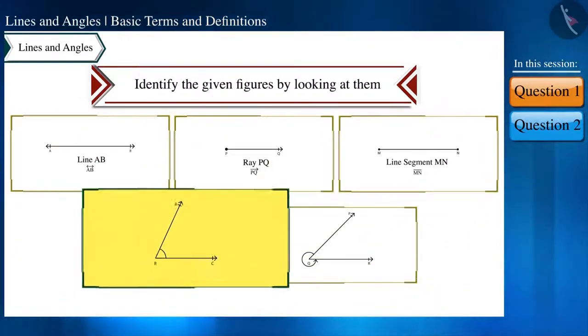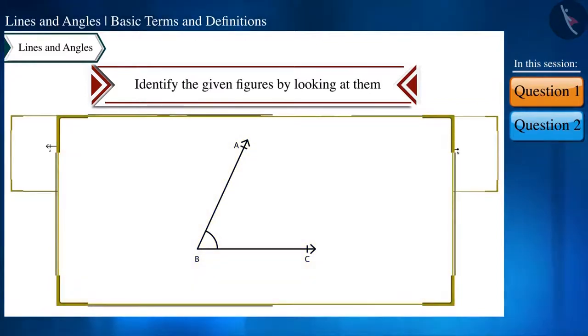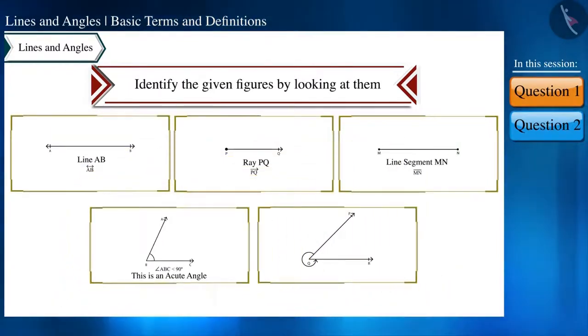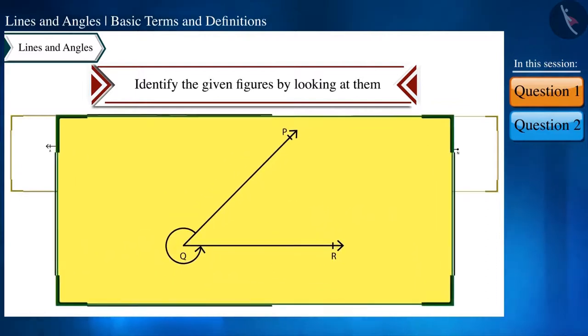In this figure an angle is given, angle ABC. And by looking at it we can easily say that its measure is less than 90 degrees. Therefore angle ABC is an acute angle.